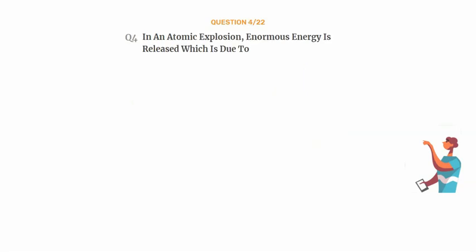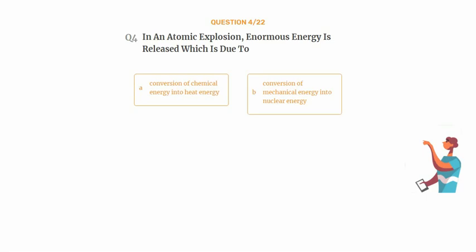Question number 4. In an atomic explosion, enormous energy is released which is due to. Option A: Conversion of chemical energy into heat energy. Option B: Conversion of mechanical energy into nuclear energy. Option C: Conversion of mass into energy. Option D: Conversion of neutrons into protons.